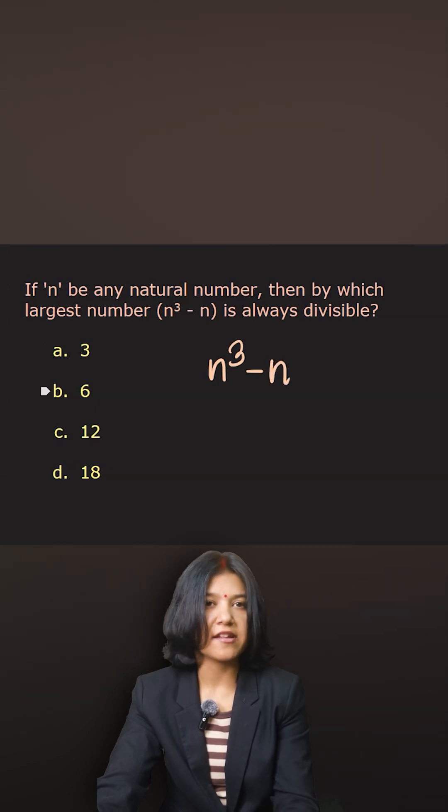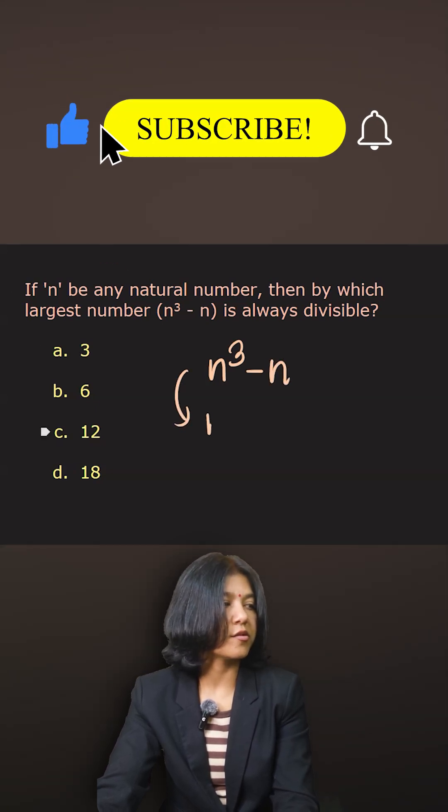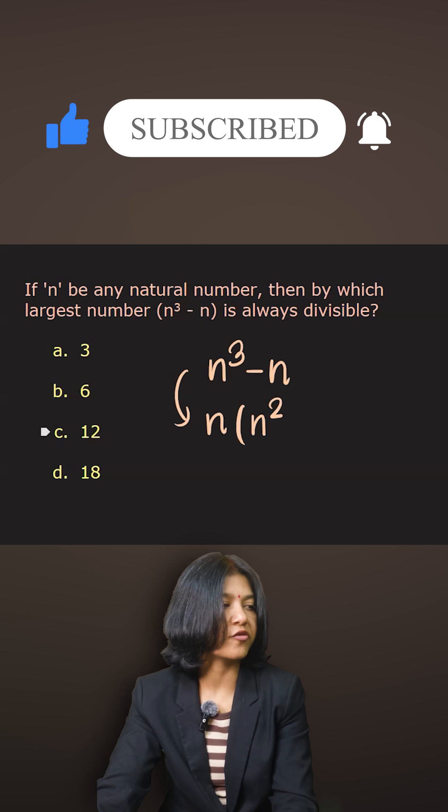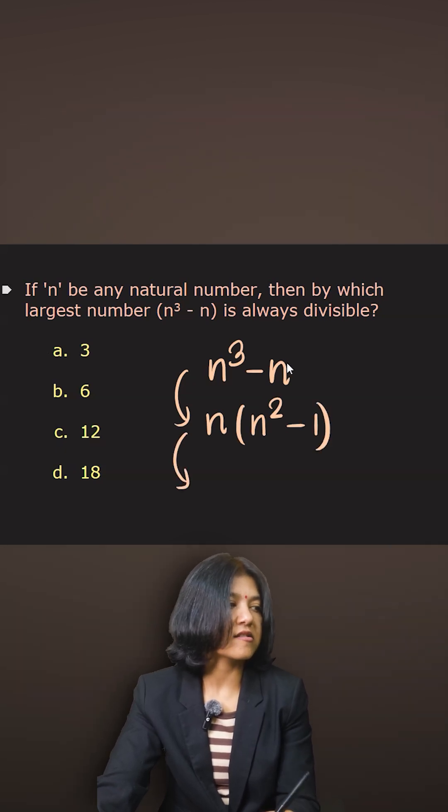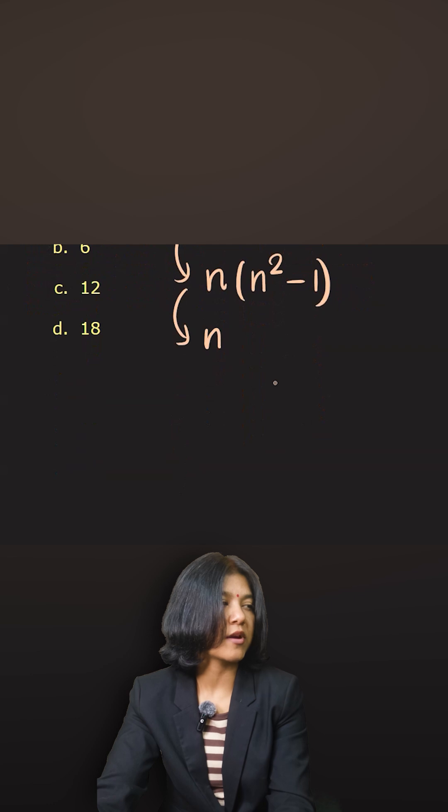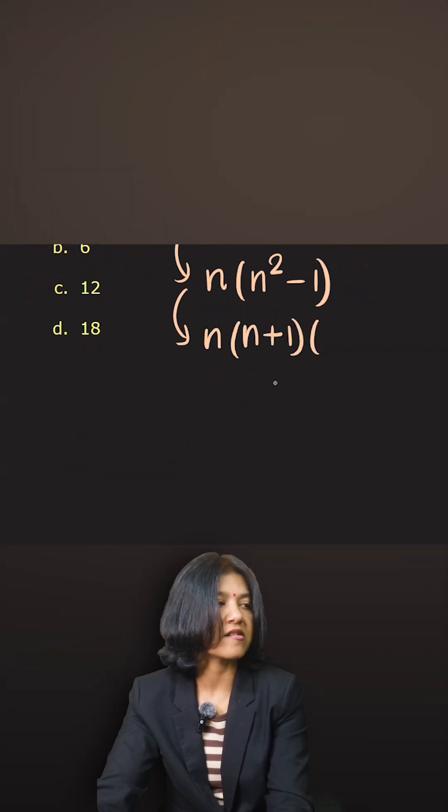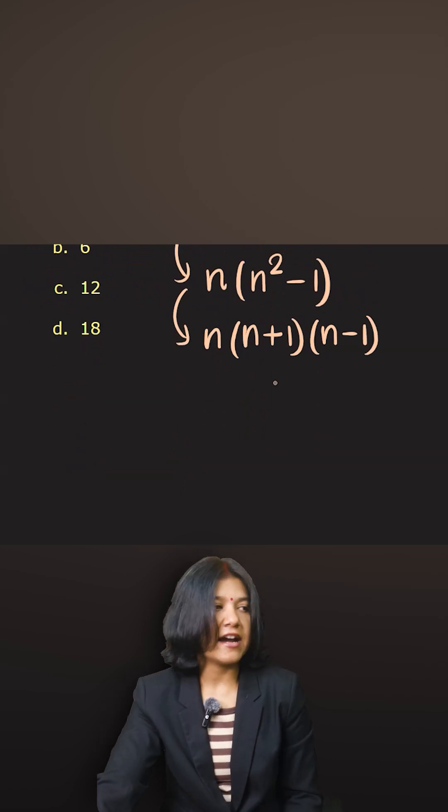By taking n common, n is a common factor here, leaving two n's in the first place, so n² - 1. I can factorize n² - 1 as (n + 1) times (n - 1) because it is the difference of two squares.